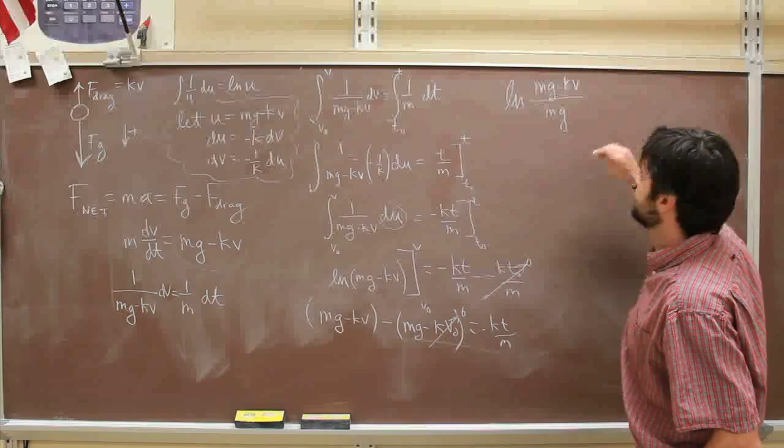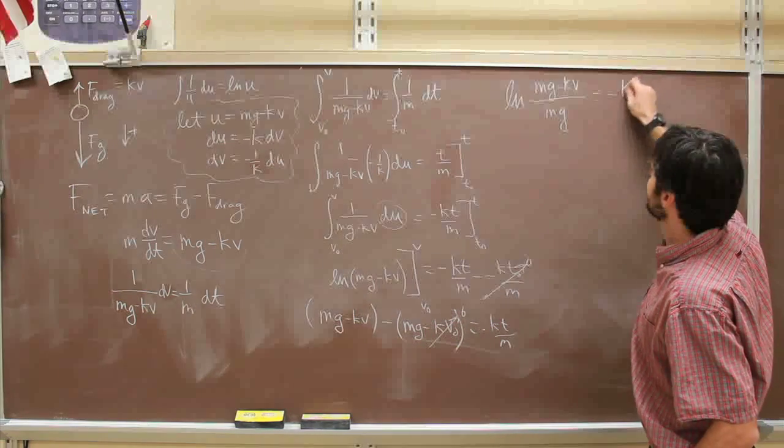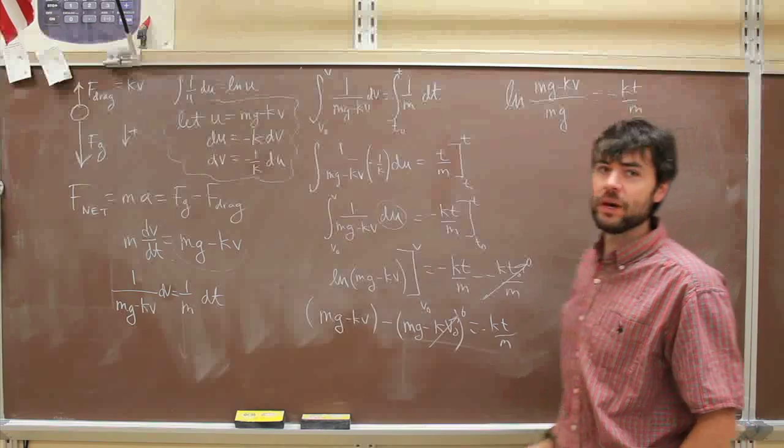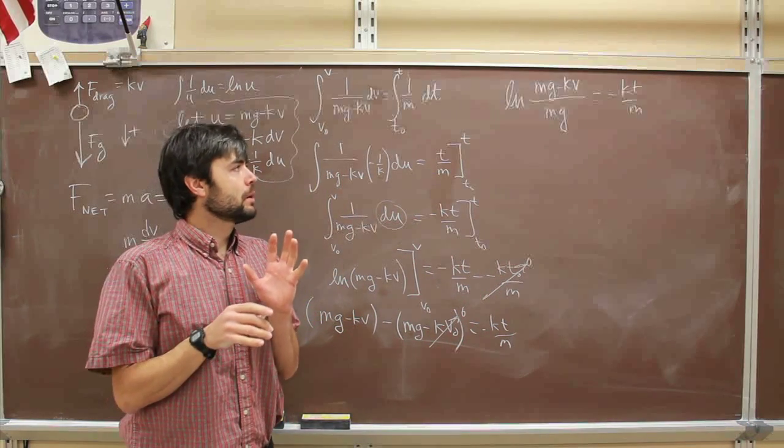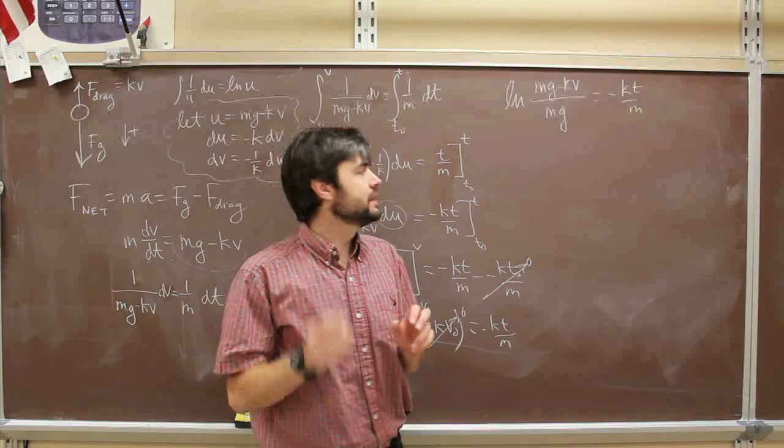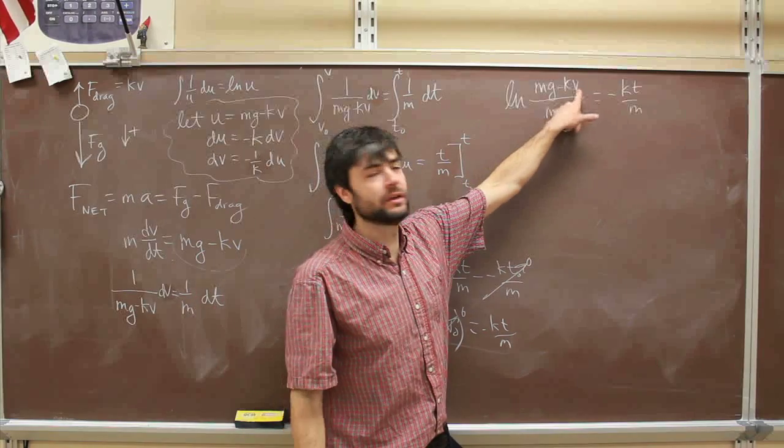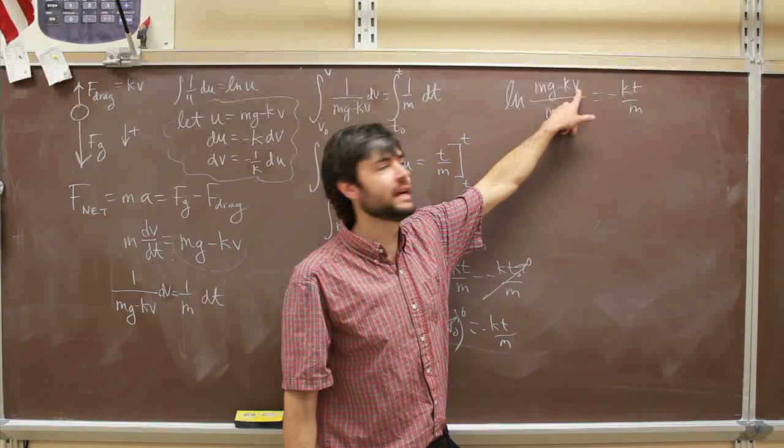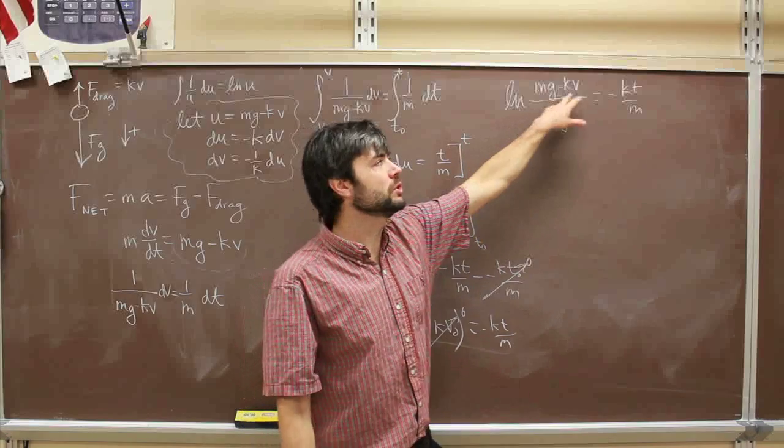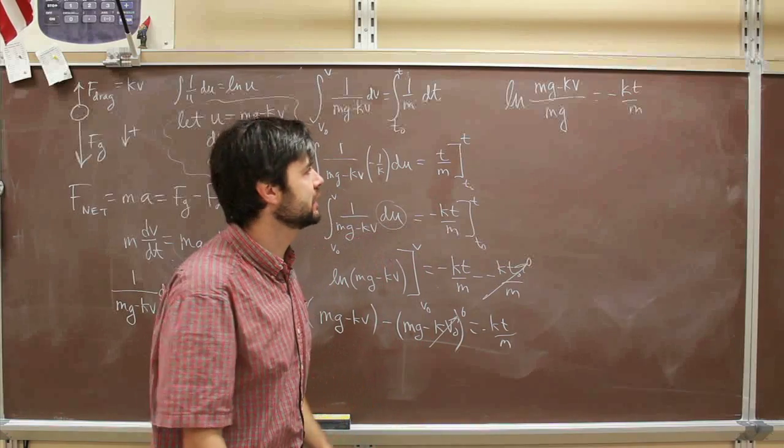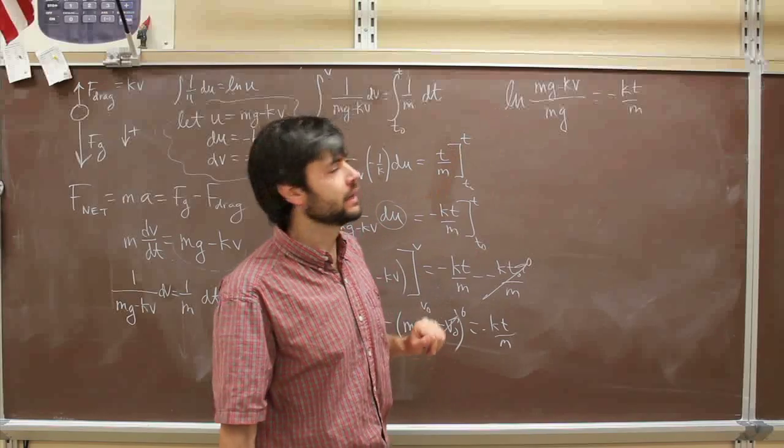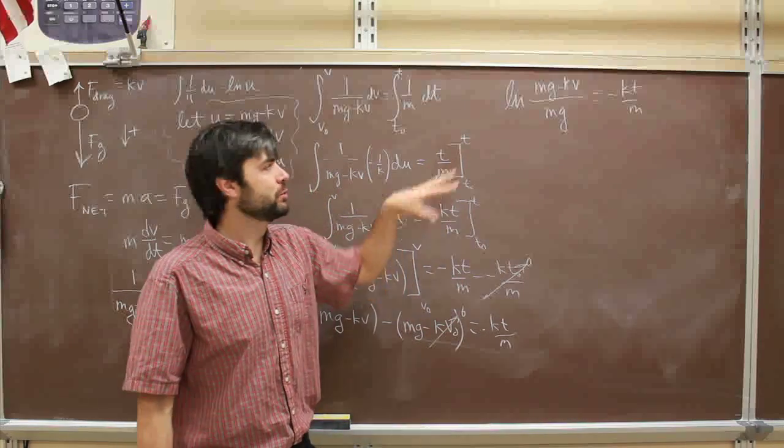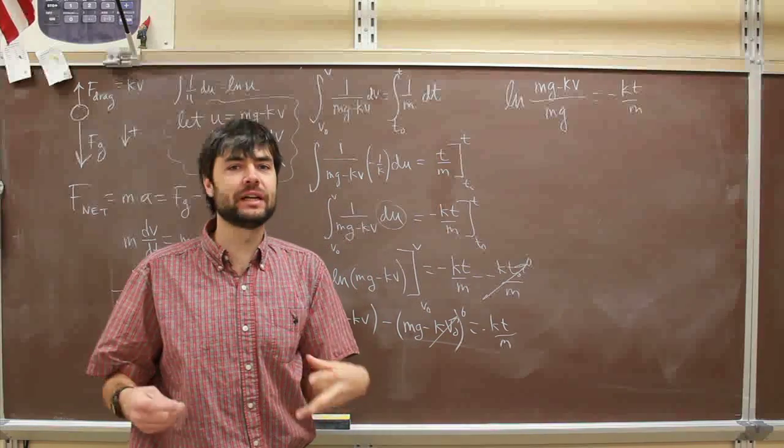We might want to take just a second out here and ask ourselves, what are we doing? What are we trying to do? We're trying to get this formula for the velocity, the instantaneous velocity at any time. We're almost there. We've got to get that v isolated. Now it's trapped within an ln, a natural log. What's the opposite? If we want to get this out, what's the opposite of a natural log? Well, it's e.